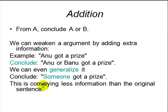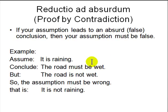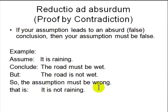Then we have reductio ad absurdum, which means proof by contradiction. If you have some assumptions and you finally conclude something false or absurd, then the assumption must be false. For example, assume it is raining — then the road must be wet. But suppose we can see the road is not wet, so the assumption must be wrong and we can say it is not raining. If your assumption leads to a false conclusion, you can conclude the assumption was wrong.